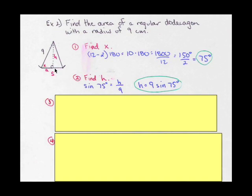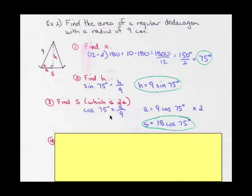Next is to find the base. The base I labeled as s for the side, which is also the side length, but really what I'm going to be finding is a, which is half of the base. That's because that's the part in the right triangle that I can find. Using cosine because I want the adjacent and I have the hypotenuse, cosine of 75 equals the adjacent over 9. I multiply both sides by 9, so I get 9 cosine 75.